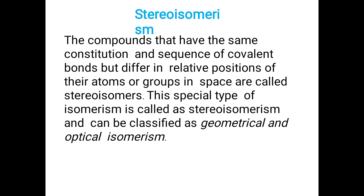The next main branch of isomerism is stereoisomerism. Compounds that have the same constitution and sequence of covalent bonds but differ in the relative positions of their atoms or groups in space are called stereoisomers. This spatial type of isomerism is called stereoisomerism, and it is further classified into geometrical isomerism and optical isomerism.